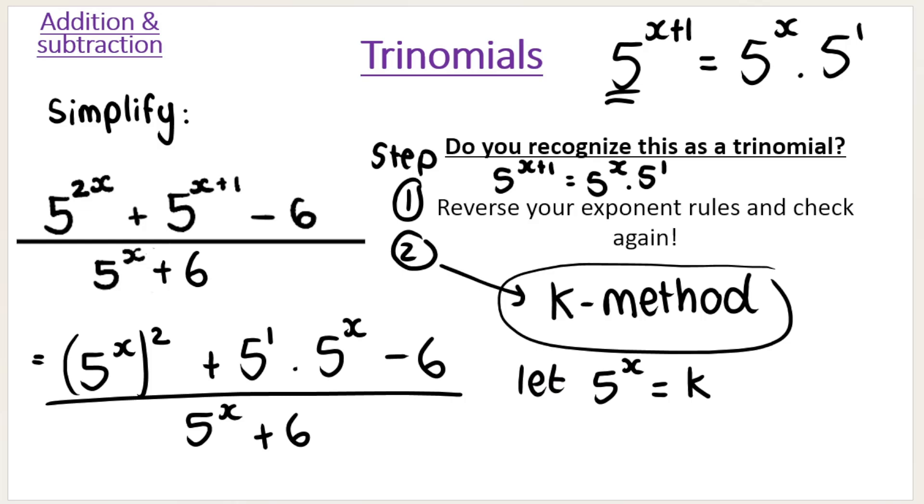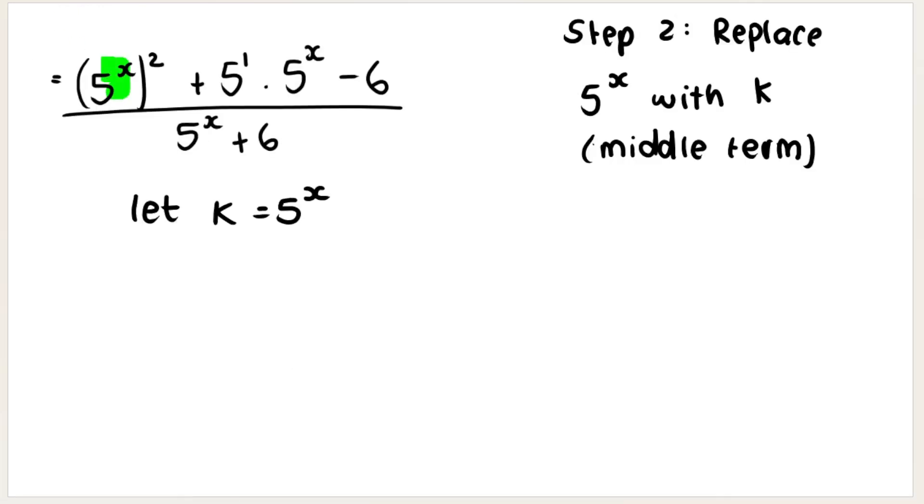Now watch what happens when I do this. Instead of 5 to the power of X squared, remember, we're going to replace that with K. We're going to write K squared plus instead of writing 5 multiplied by 5 to the power of X, we're going to write 5 multiplied by K because again, we're replacing that with K and then minus 6. So that's the numerator.